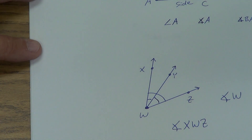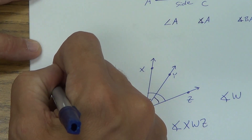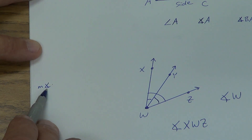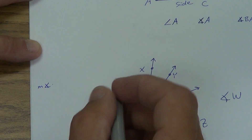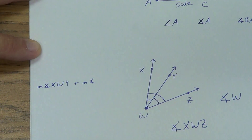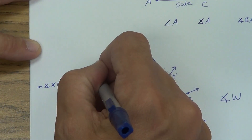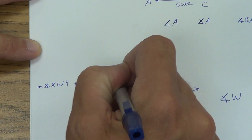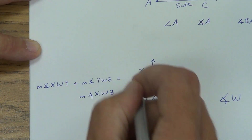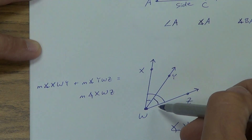Just like we could add two smaller segments together to get a bigger segment, we can add two smaller angles together to get a bigger angle, as long as they're right next to each other. So the measure of angle X, W, Y plus the measure of angle Y, W, Z equals the measure of angle X, W, Z. Little angle plus other little angle equals the big angle.